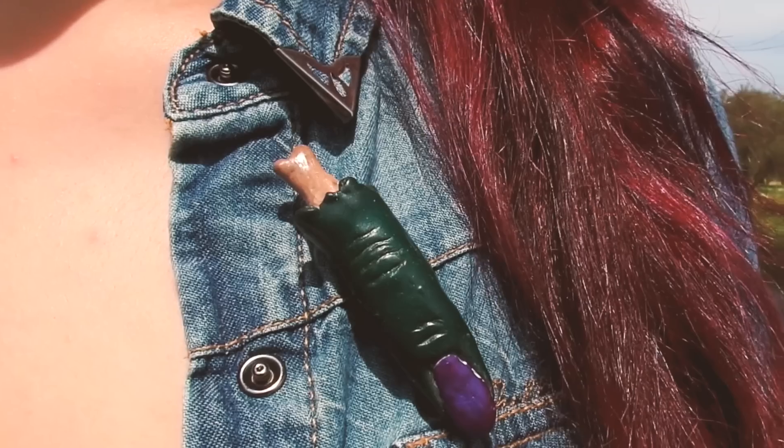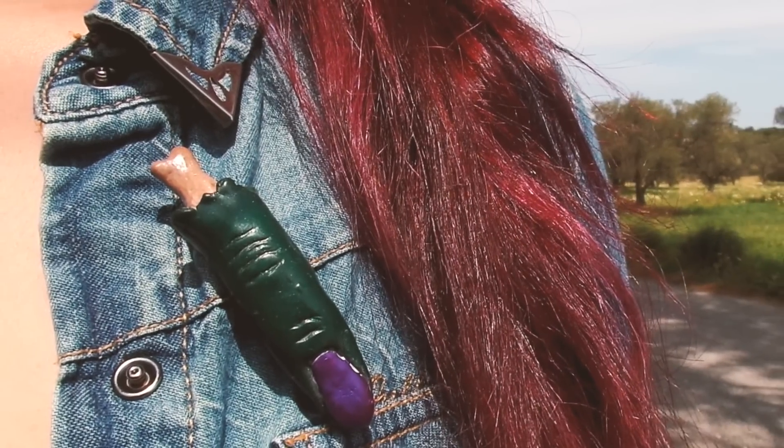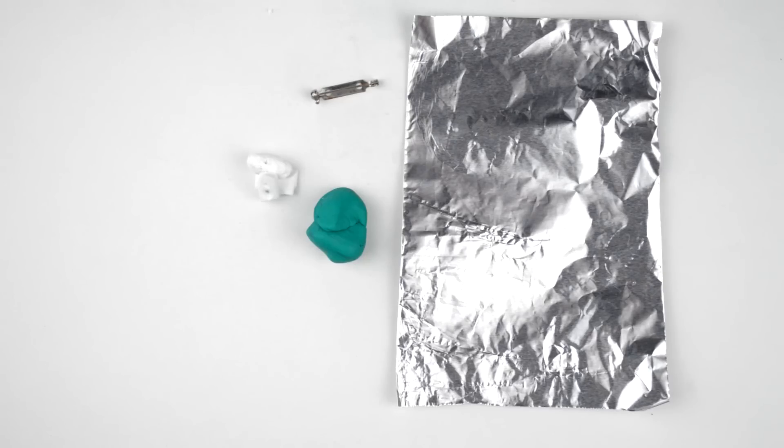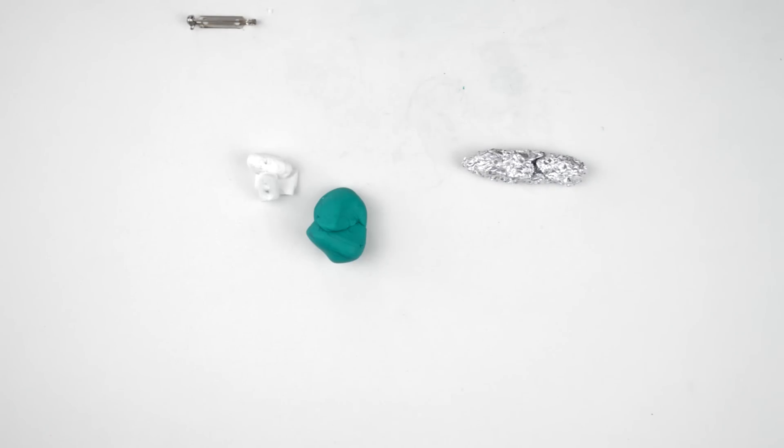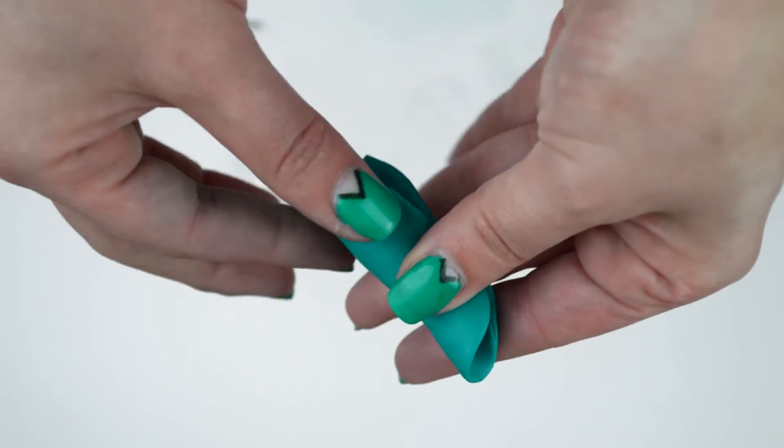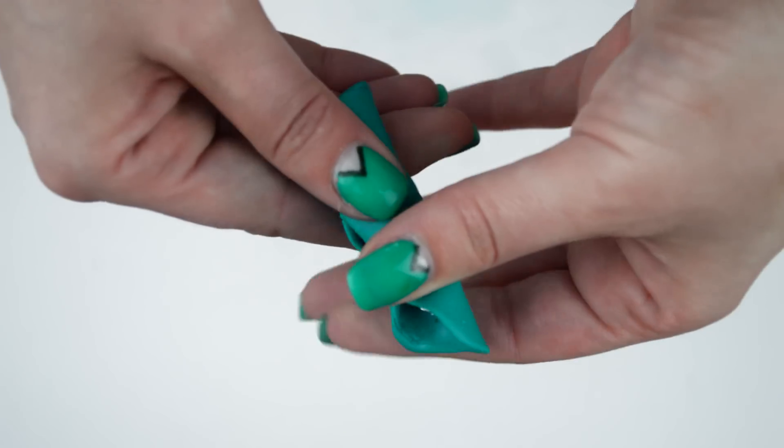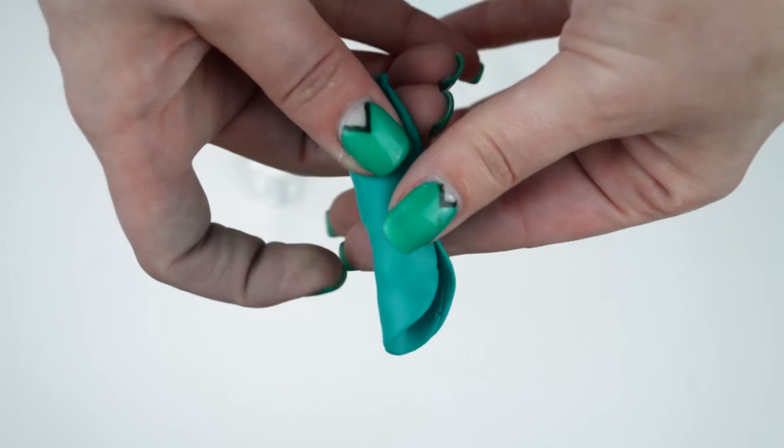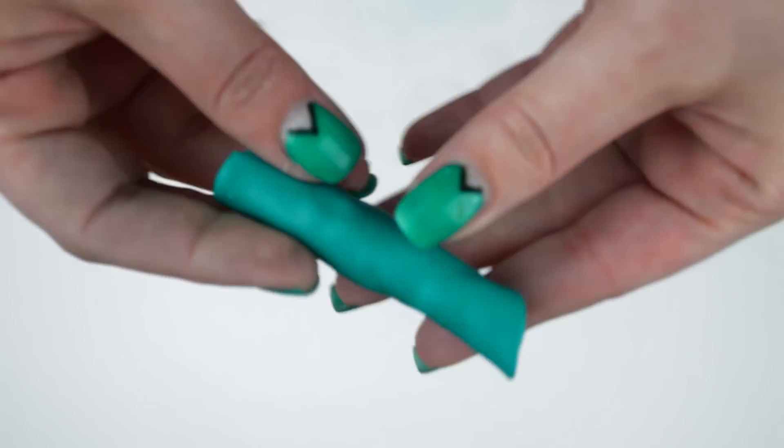For the second part of this video, we're making a zombie finger brooch. For this one, we'll need a small piece of aluminum foil, which we're going to crease like a sausage, then wrap it inside any color clay you like. And now you must have something like this.